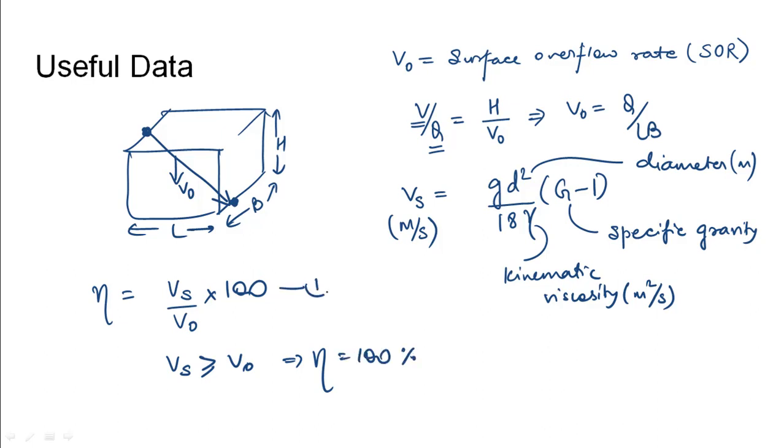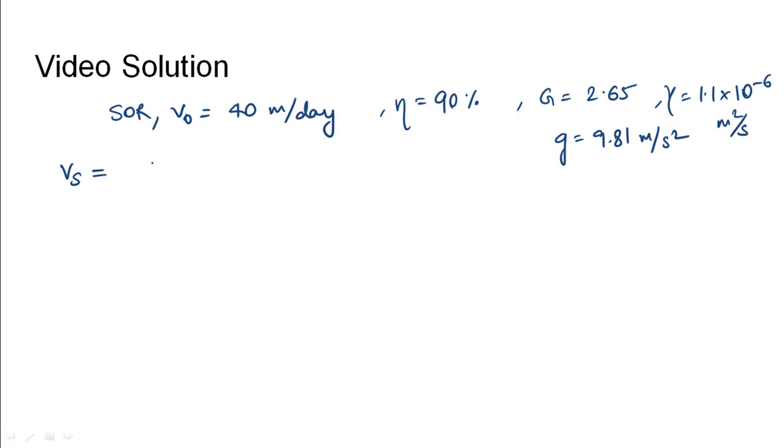In this case, we are given: surface overflow rate V₀ = 40 m/day, efficiency η = 90%, specific gravity G = 2.65, kinematic viscosity γ = 1.1×10⁻⁶ m²/s, and gravity g = 9.81 m/s².